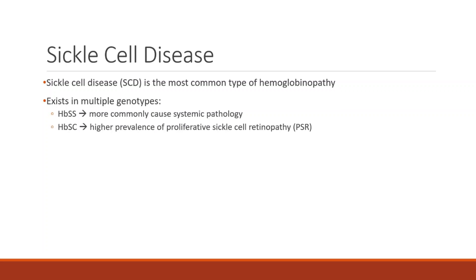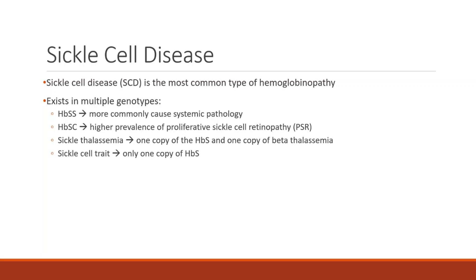The most pertinent to this talk is hemoglobin SC, as it results in a higher prevalence of sickle cell retinopathy. This genotype has a prevalence of 0.2% in the African American population. The reason this genotype presents with higher rates of proliferative sickle cell retinopathy is not known. A rare cause is sickle thalassemia, where the patient has one copy of hemoglobin S gene and one copy of beta thalassemia. Some ocular manifestations can be observed in sickle cell trait, where the patient has only one copy of hemoglobin S, affecting 8% of the African American population.